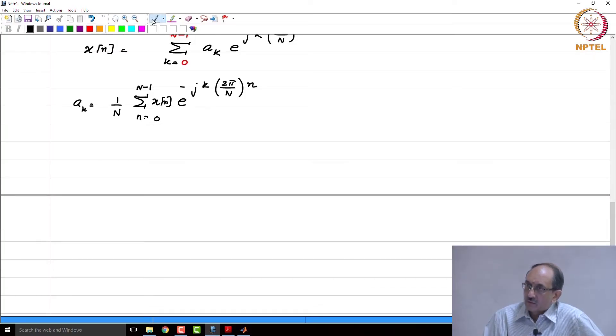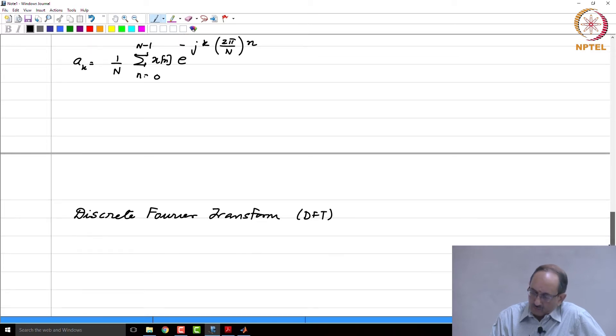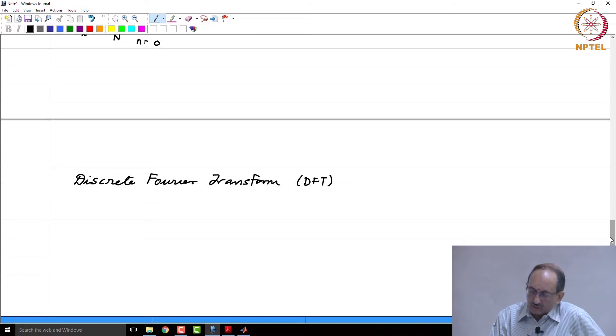Now, we are going to look at the discrete Fourier transform. And as I had said, this is DFT. This has the potential to be the fifth Fourier series representation. Let us now define this, then see how it looks like and then we will see whether it is the fifth Fourier representation that we are going to encounter.